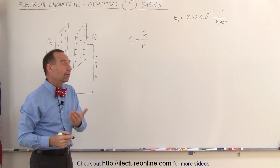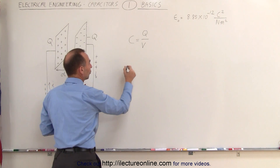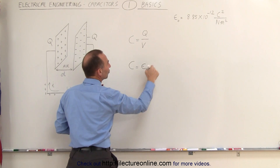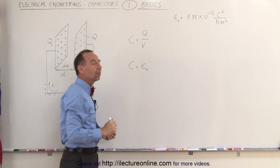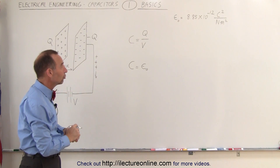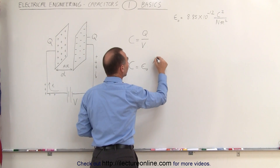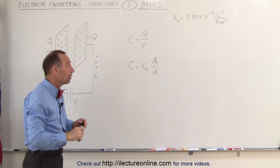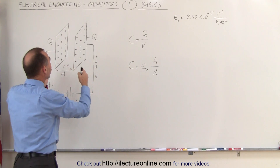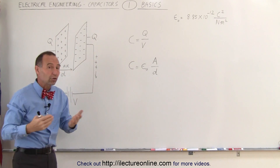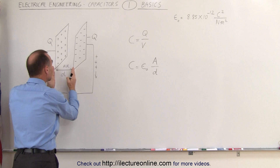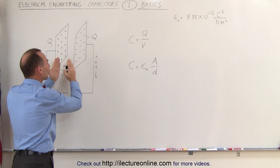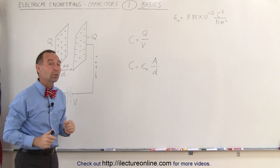You can also calculate the capacitance using its physical dimensions. The capacitance can be defined as epsilon sub-naught — 8.85 times 10 to the minus 12 coulombs squared per newton meters squared — multiplied by the area of the plates divided by the distance between them. Capacitance is proportional to how big the plates are: the bigger the plates, the more charge you can collect. It's also inversely proportional to the distance between them: the smaller the distance, the greater the capacitance, because the interaction between positive and negative charges is stronger.